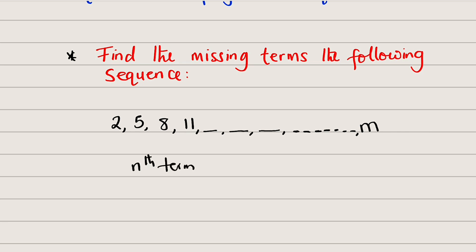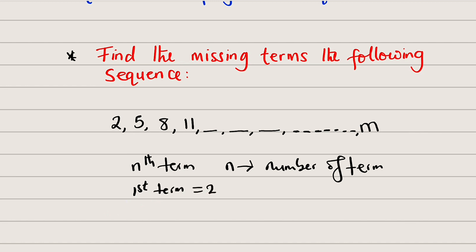But first of all, what is n? N stands for the number of the term. So if you are referring to the first number here, which is 2, that number is the first term because n is equal to 1. And if you are referring to the number 11, you can see we have 1, 2, 3, 4 — it is said to be the fourth term where n is equal to 4.